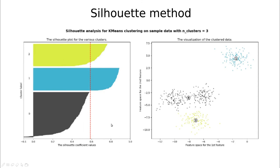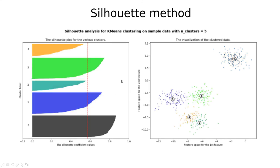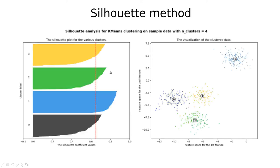With three clusters, only two are above the line. Why? Because you've split one group but not the other — it doesn't make sense to group these together but not split the other one in two. The black cluster now has many negative values, so this is not a good clustering. With four clusters, all clusters are above the red line and the thicknesses are almost the same — so this is probably the optimal choice. With five clusters, the thicknesses differ again and two clusters fall below the red line. So four wins.